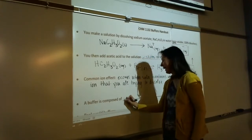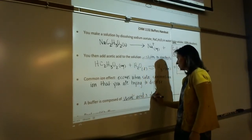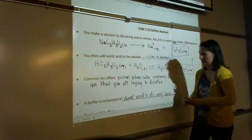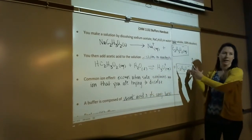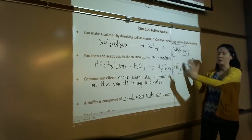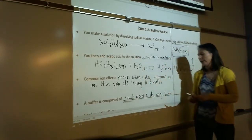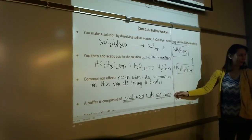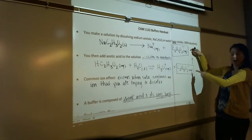A buffer is composed of a weak acid — it must be a weak acid — and its conjugate base. Why can't you use a strong acid? If you use a strong acid, a strong acid fully dissociates. There's no equilibrium to shift because the equilibrium is stuck on the products and it's not going anywhere. So you can never use a strong acid — it must be weak. And then you need to have the conjugate base in there as well because that's your common ion. So we're treating that like our common ion.